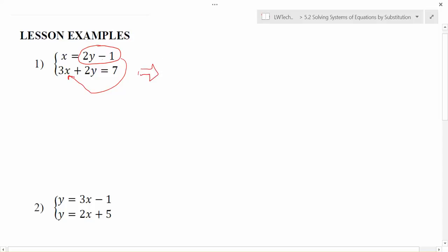The first equation says x equals 2y minus 1. So in the second equation, I'm going to go three times, instead of x, I'm going to use this 2y minus 1 requirement from my first equation. And then plus 2y equals 7. So all I did is I replaced this x with the 2y minus 1.